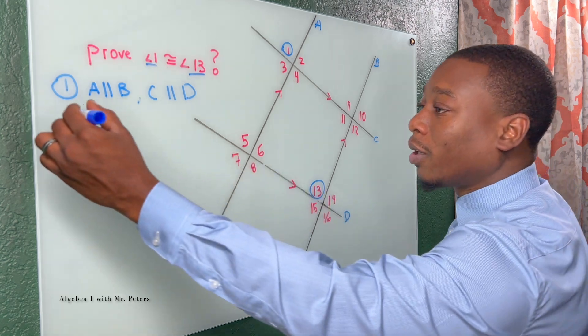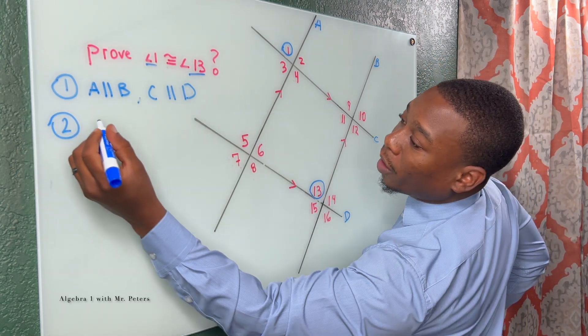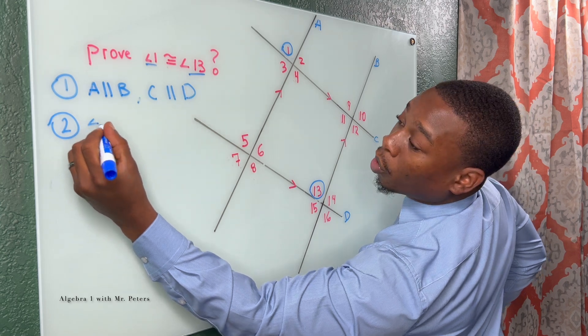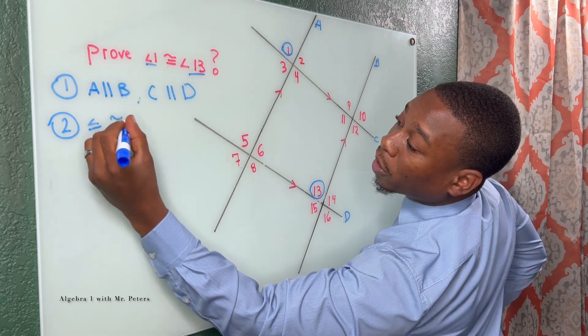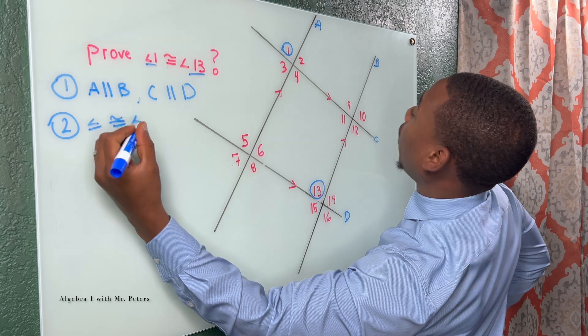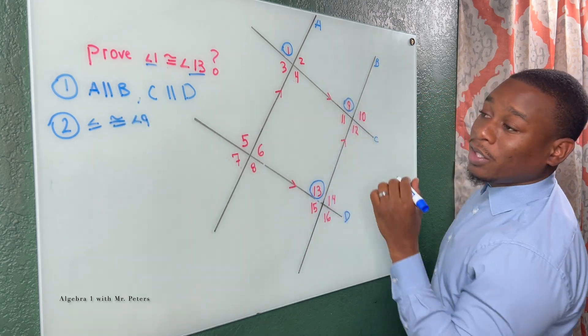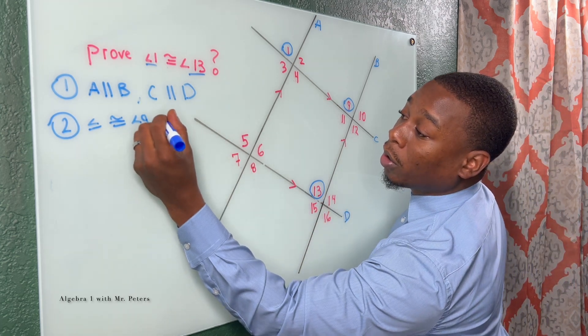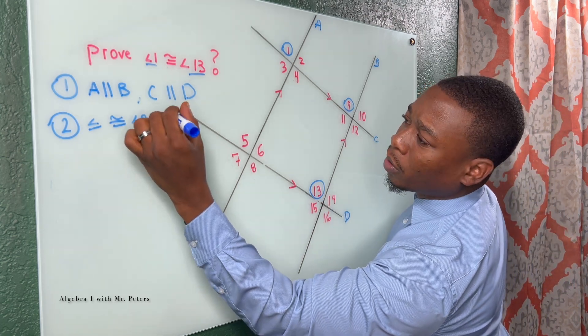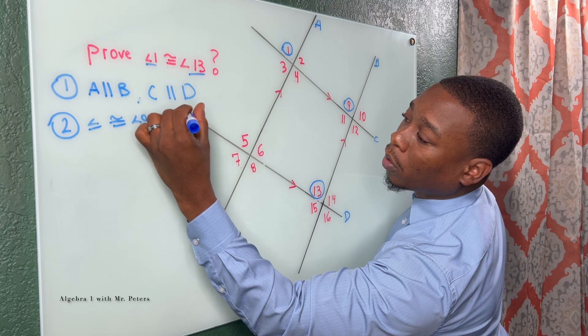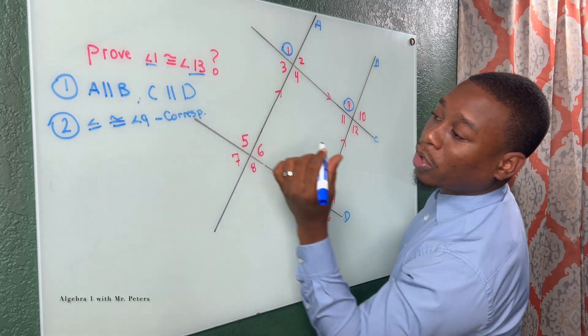Well, let's look at it like this. So I will come in here and now say that angle 1 is congruent to angle 9. So now I'm saying these two are the same. How are they the same? Corresponding angles are congruent.